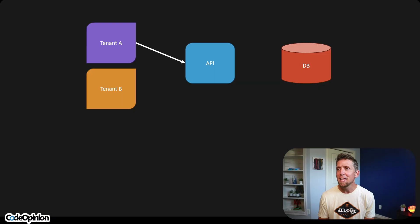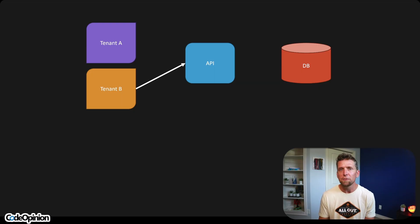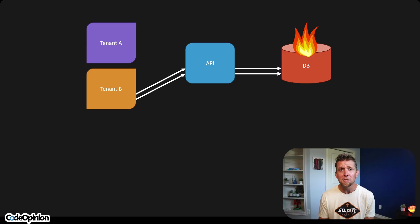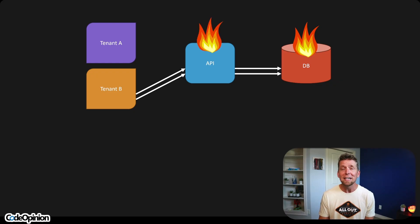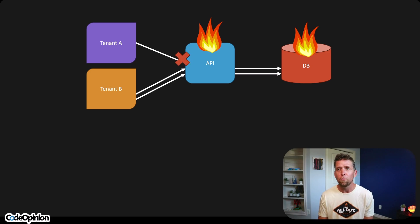The second con of having a shared database is noisy neighbors, because you have different tenants fighting over resources. Tenant A may have a limited number of users and everything's fine, but tenant B with a lot more users making a lot more requests can cause issues with our database, potentially also with our app and API — and that's going to affect tenant A, which was doing nothing wrong.